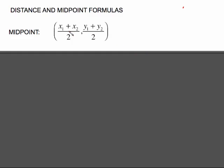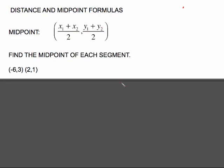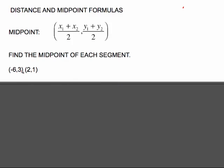All we have to do is take the average of the x values, comma, the average of the y values. If it helps you, you can label this as x1, y1, and this one is x2, y2. Because all the subscripts refer to is just the first point and the second point. You have seen these subscripts before when you did slope.